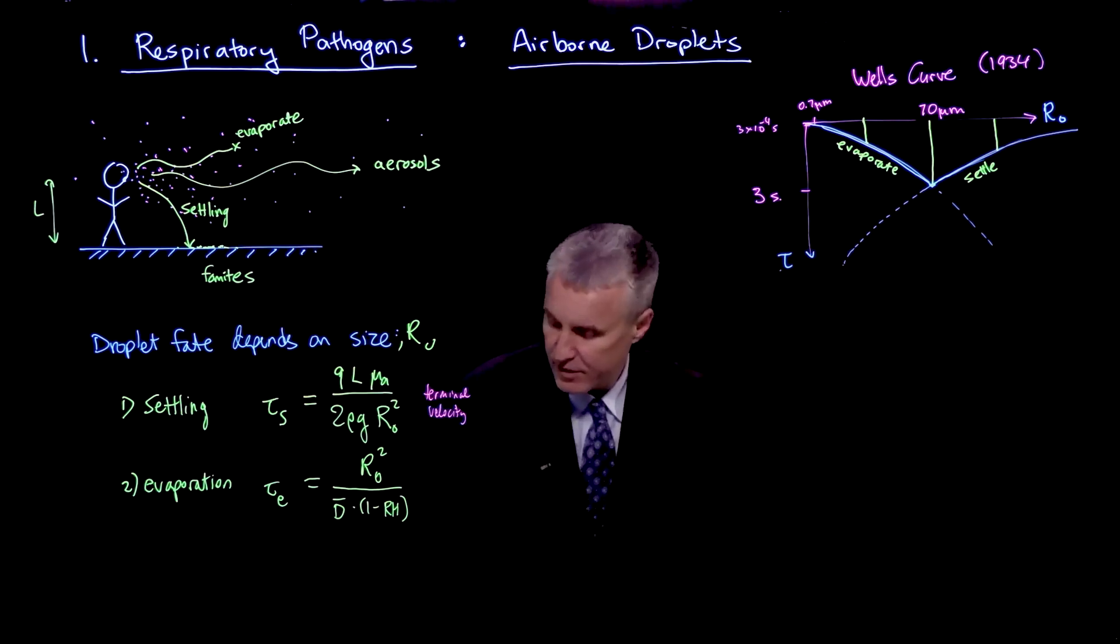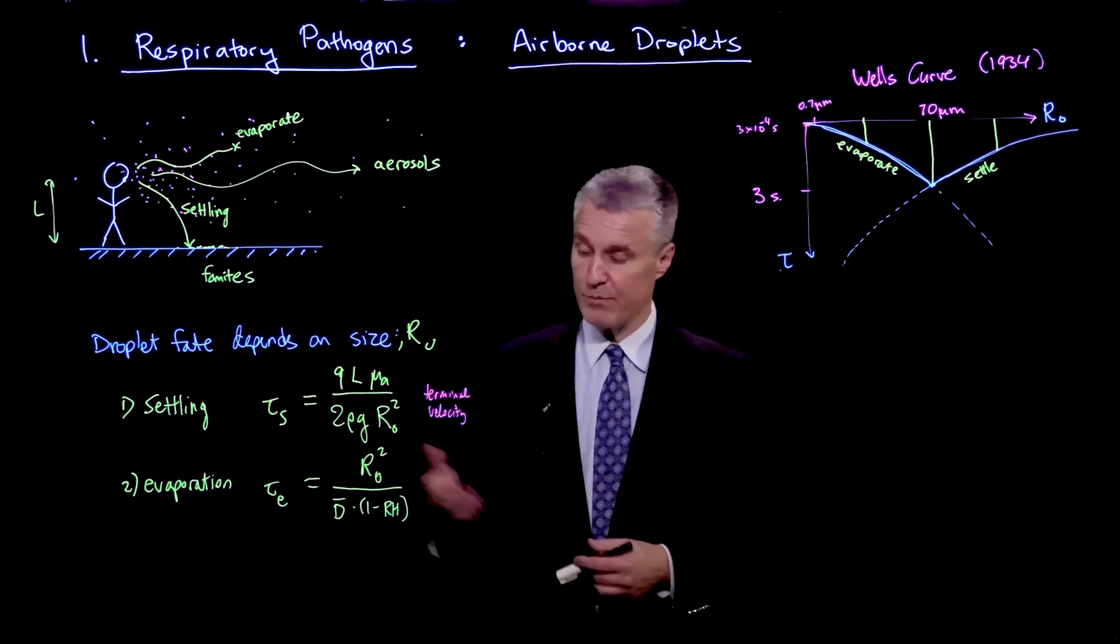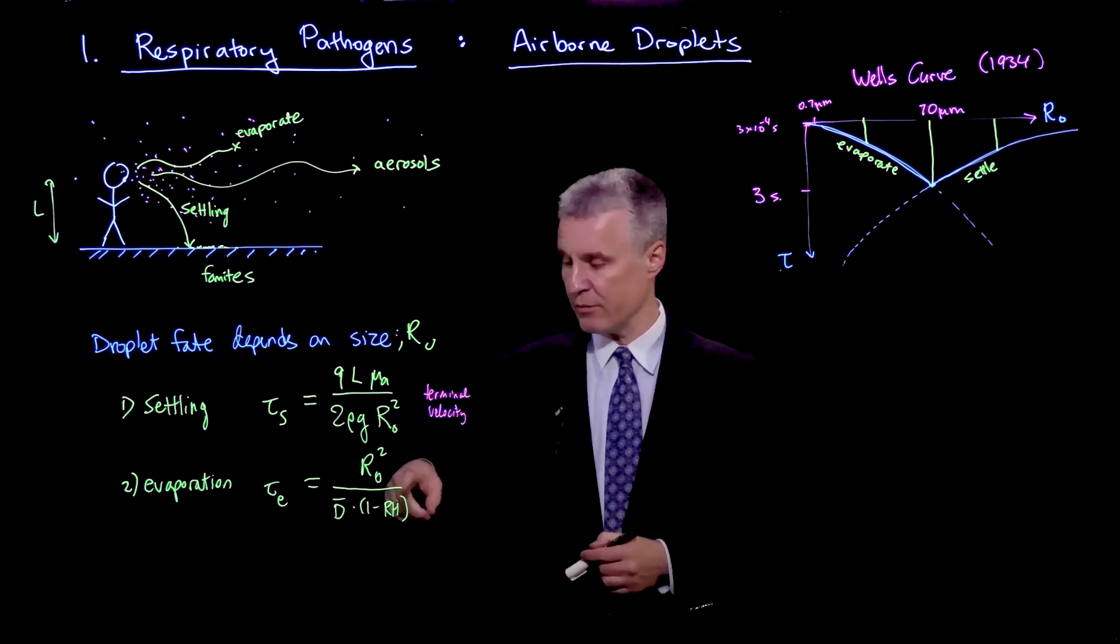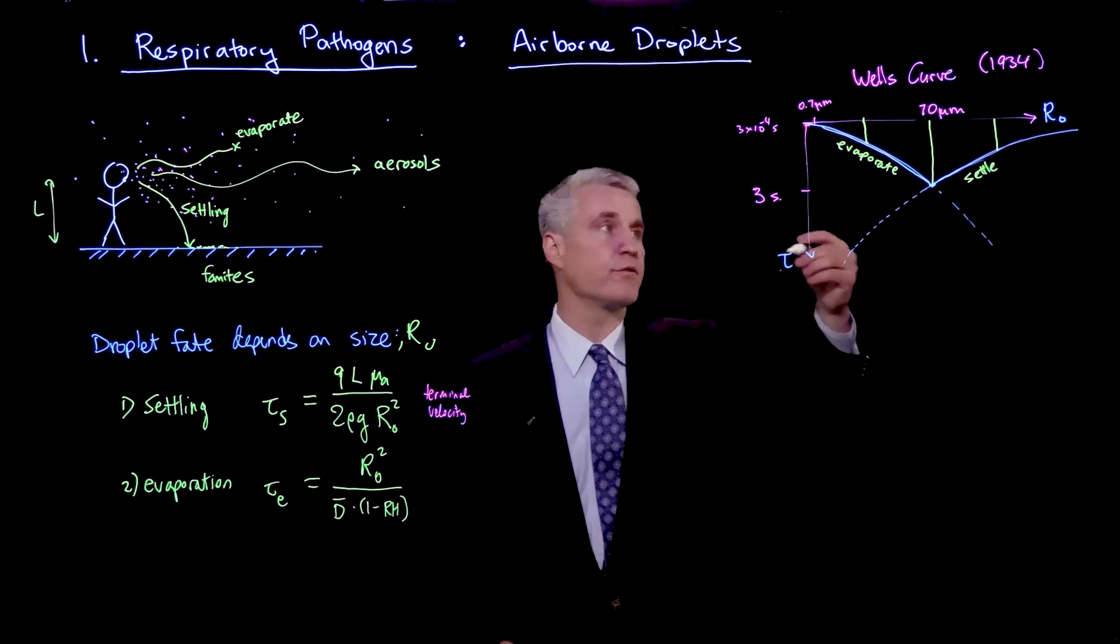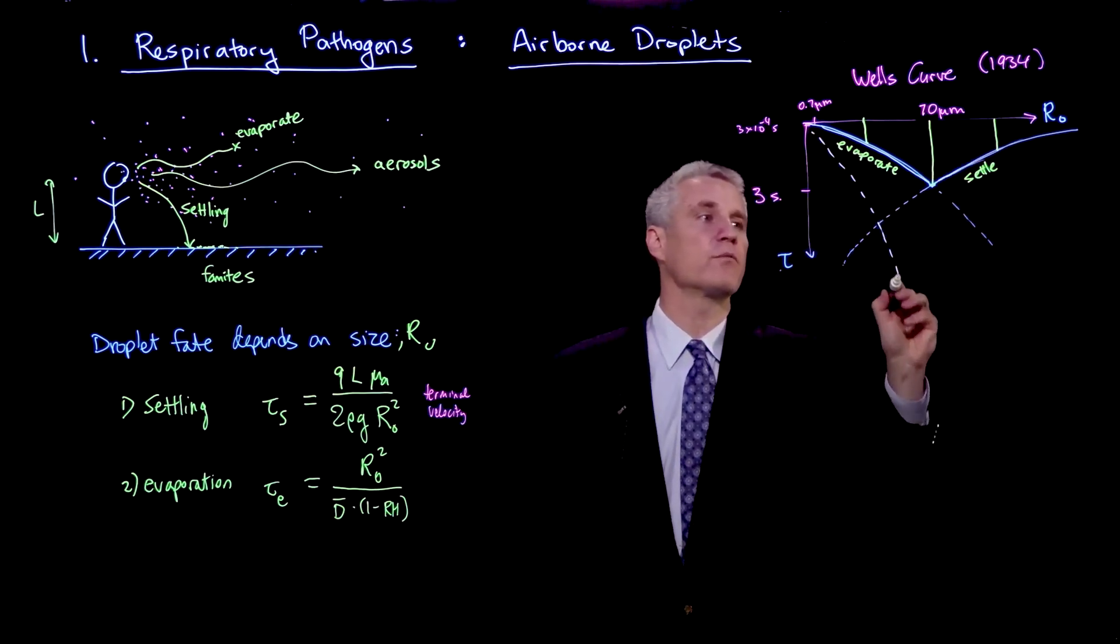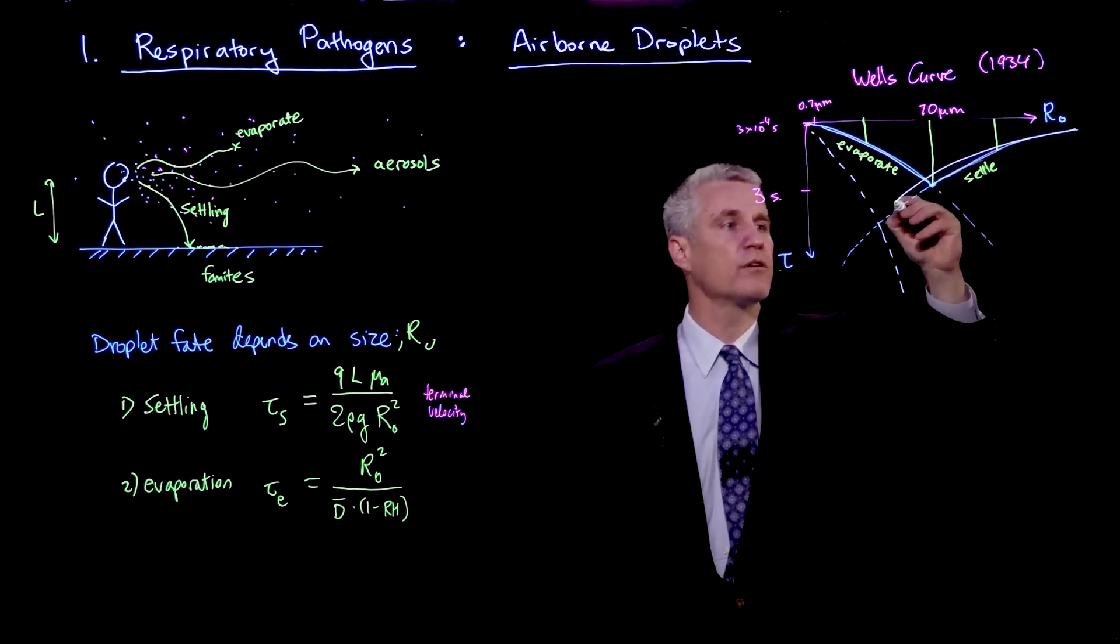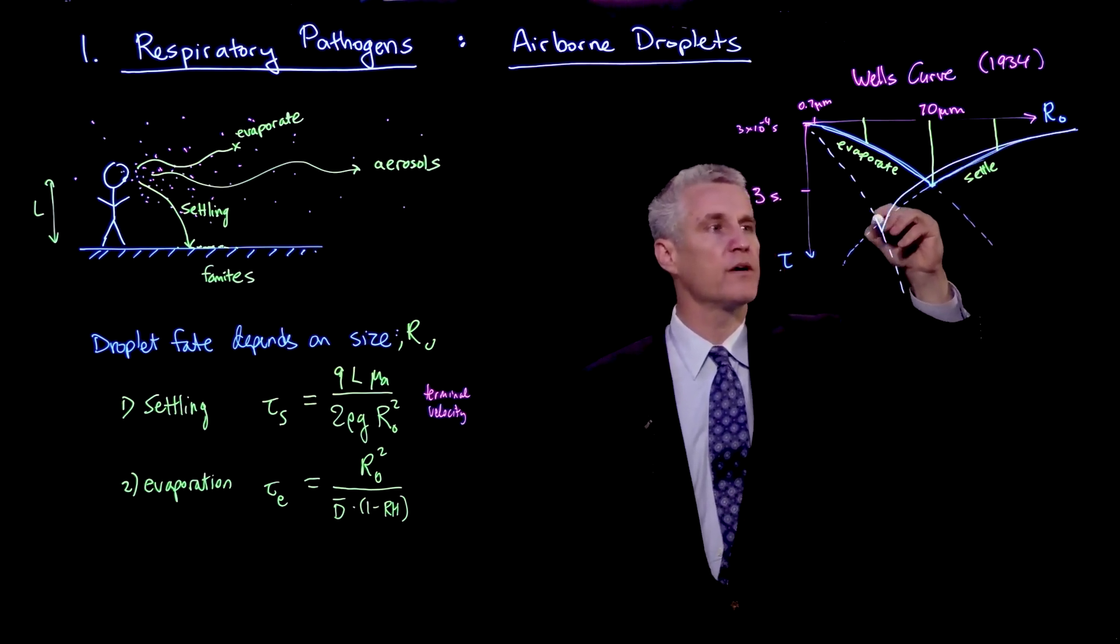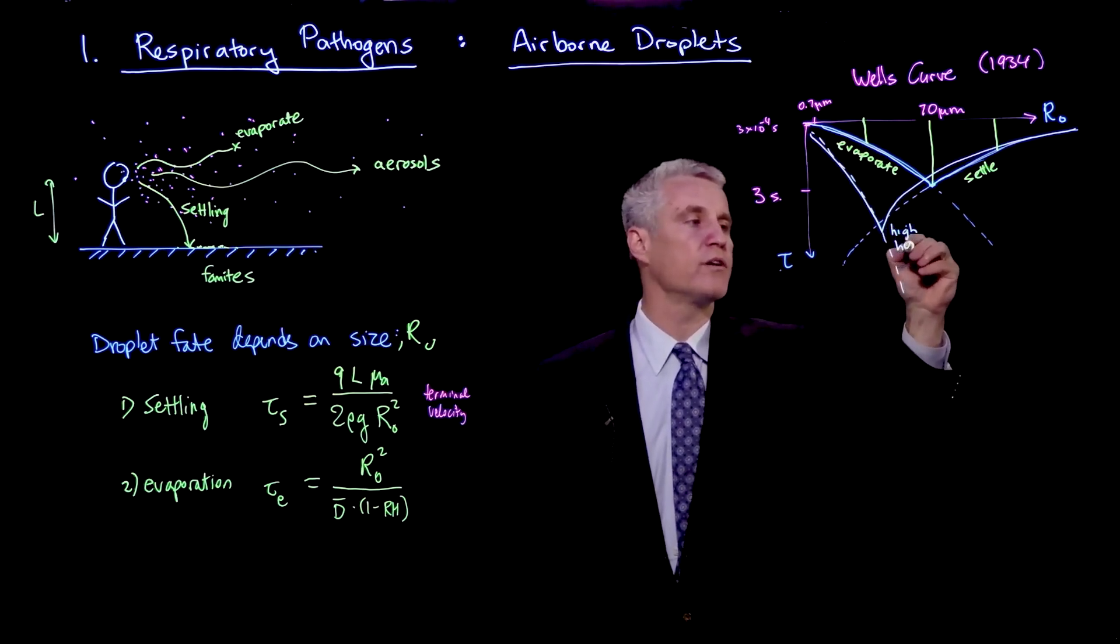Now there's also the humidity effect which can be seen here. So for example, if we're at 90% relative humidity, this factor here is a factor of 10. So what was on the order of a few seconds, if we're at higher humidity, then this curve kind of ends up looking more like this. And we may follow this curve a little bit further and end up with something like this. This would be high humidity.